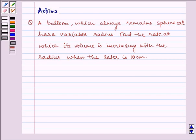Hello and welcome to the session. Let us understand the following question which says a balloon which always remains spherical has a variable radius. Find the rate at which its volume is increasing with the radius when the latter is 10 cm.